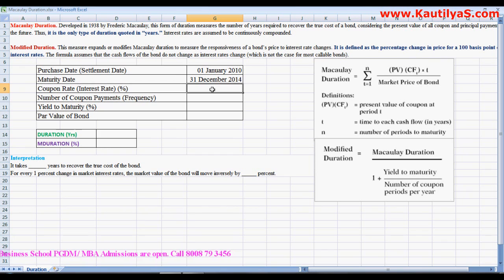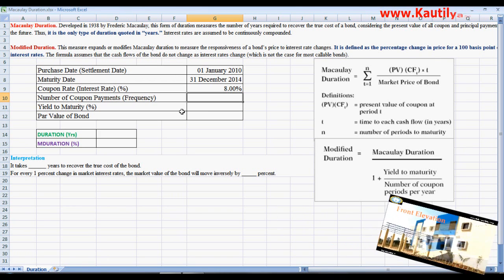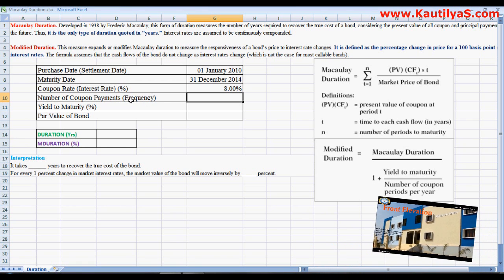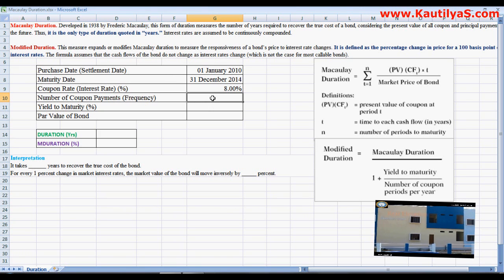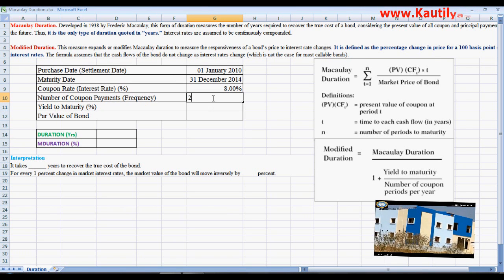Which pays a coupon. Coupon is an interest amount paid on this bond, and coupon remains constant throughout the life of the bond. So we assume that the coupon on this bond is 8%, and number of coupon payments, that is the interest on a coupon is paid quarterly, monthly, annually, or yearly. Normally coupon is paid two times in a year, so frequency we say is 2.